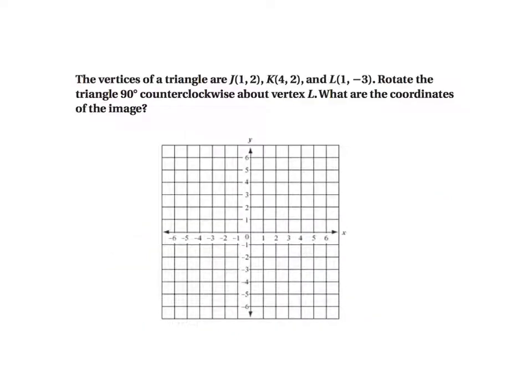So let's try a problem. The vertices of a triangle are (1, 2). So that's the point J. (4, 2), which is the point K. And (1, -3), which is the point L. These create a figure that is a triangle. Pause the movie and write this down into your notes.